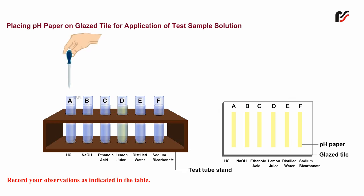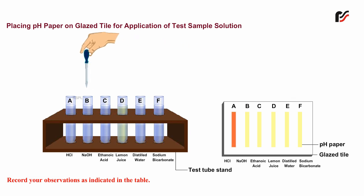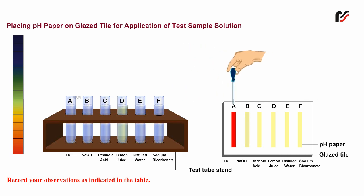On adding a drop of dilute hydrochloric acid, the pH paper turns bright red, giving a pH equal to 1.0 — the solution is acidic in nature. On adding a drop of dilute sodium hydroxide, the pH paper turns bluish violet, giving a pH equal to 14.0 — the solution is basic in nature.